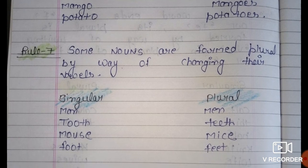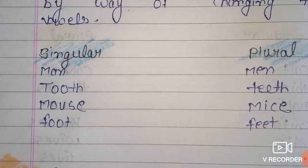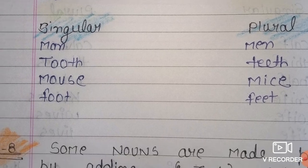Some nouns form their plural by changing their vowels. For example, Mouse — the vowels are changed, and we use I in place of the original vowel, giving us Mice.